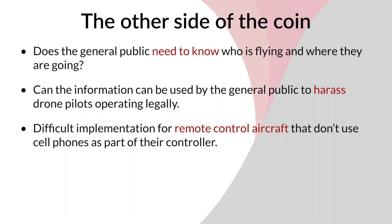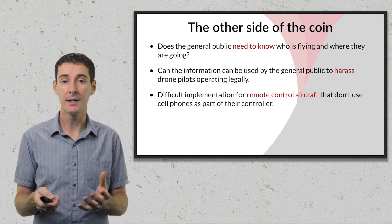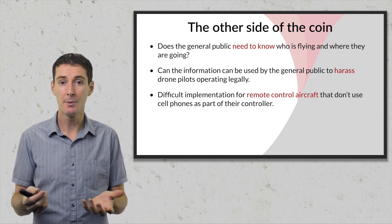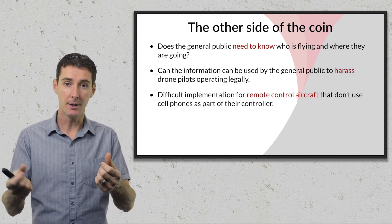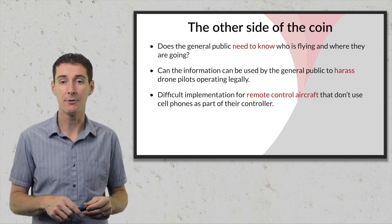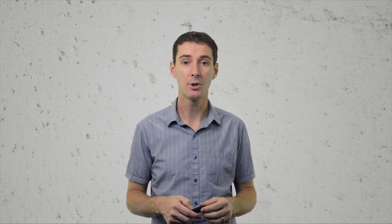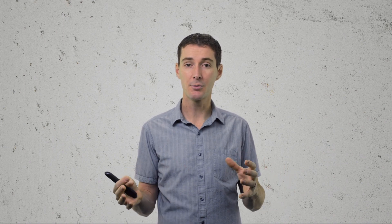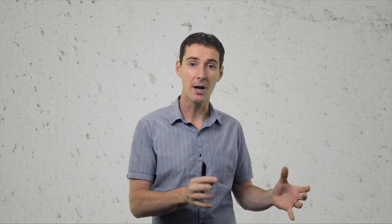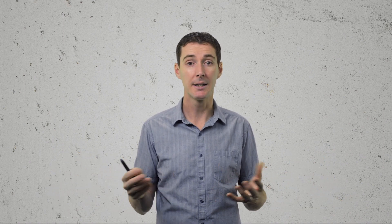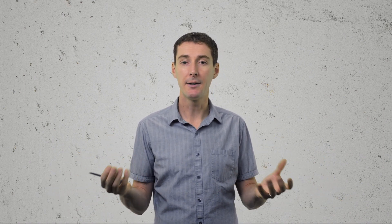The other counter-argument is: how do we implement this for traditional remote control aircraft? Before quadcopters, most hobbyists were flying at a field with a simple radio controller that has no cell phone, no way to send that information. How do we retrofit this without placing an additional burden on operators who have been doing this safely for 20, 30, 40, or 50 years? We have two sides of the industry — commercial operators and hobbyists — with completely different interests.